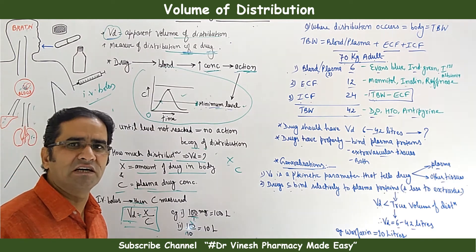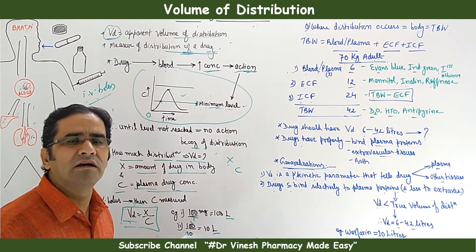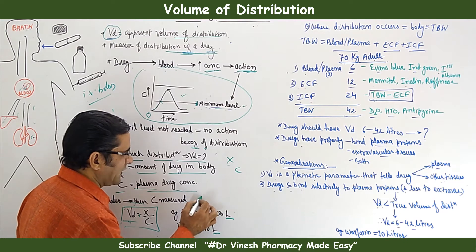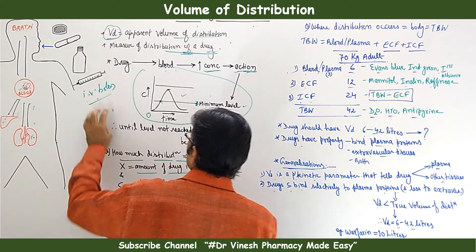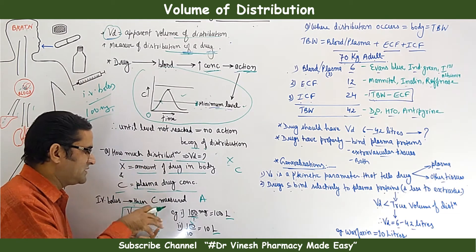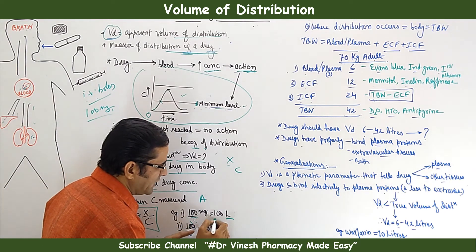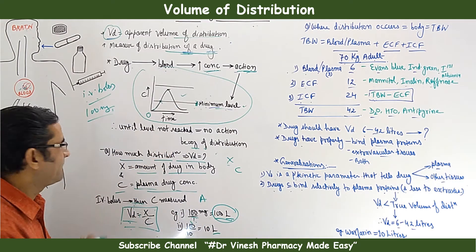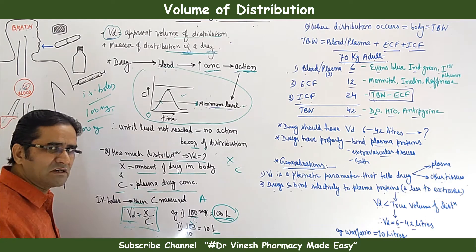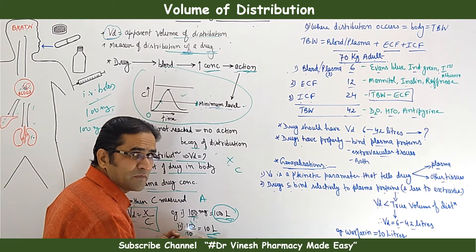Volume of distribution is expressed in liters or liters per kg. For example, in Case 1: 100 mg IV bolus was given and plasma concentration measured was 1 mg/L, giving Vd = 100 liters. In Case 2: 100 mg was injected and plasma concentration was 10 mg/L, giving Vd = 10 liters. So two different cases yield 100 liters and 10 liters respectively.